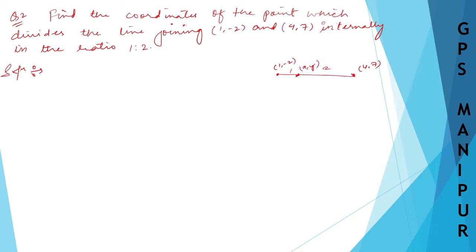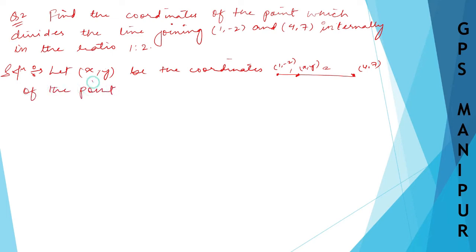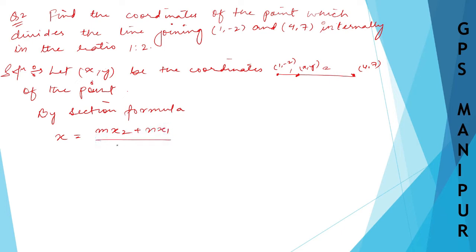Let P(x, y) be the coordinates of the point. By the section formula, x is equal to (m·x2 + n·x1) divided by (m + n), and y is equal to (m·y2 + n·y1) divided by (m + n).